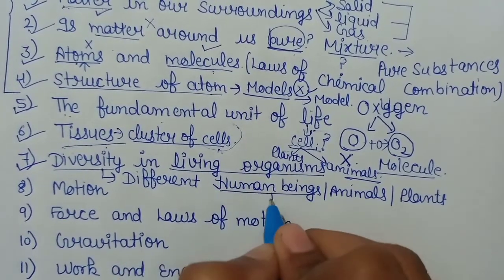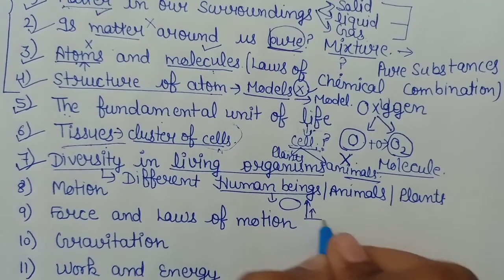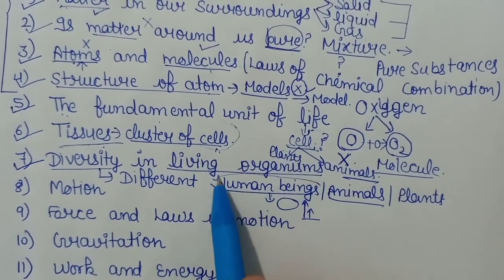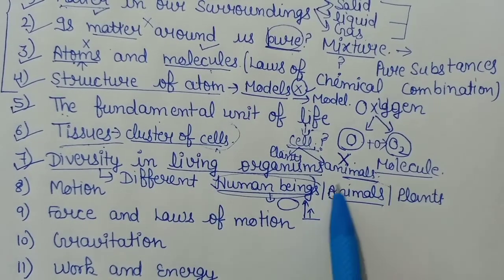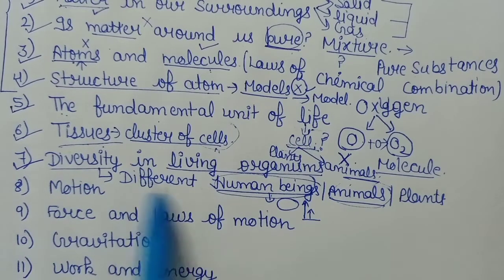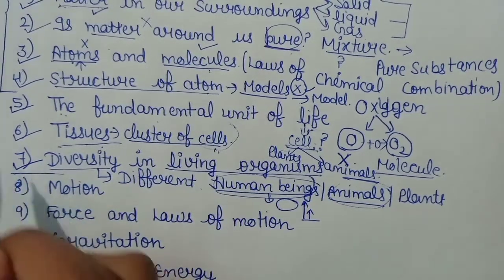तो human beings की बात करें तो एक group में किसी की height बहुत ज़्यादा होती है, किसी की कम — तो human beings भी एक दूसरे से बहुत different हैं। अगर human beings को animals के साथ compare करें तो human beings की category अलग है, animals की different — और animals में भी monkey की category अलग है, cow की अलग है। तो living organisms की सब categories अलग हैं — यही diversity है जो हम पढ़ने वाले हैं in chapter number 7. A part of biology.